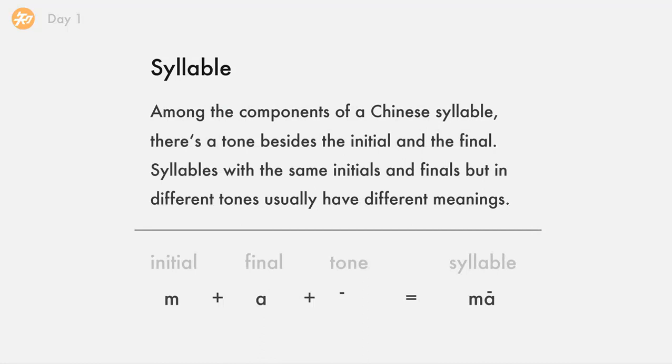Before we go into the details of our course, we need to have a big picture of what a syllable is made up of. The syllable is called Pinyin in Chinese, i.e. the Phonetic Transcription. Among the components of a Chinese syllable, there is a tone besides the initial and the final. Syllables with the same initials and finals, but in different tones, usually have different meanings. In this lesson, we are going to learn the first half of the initials.